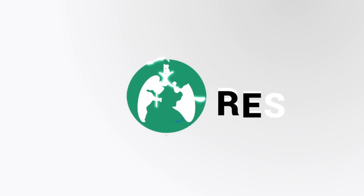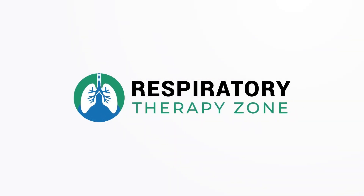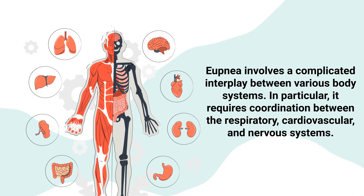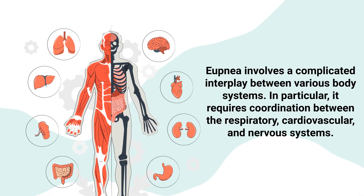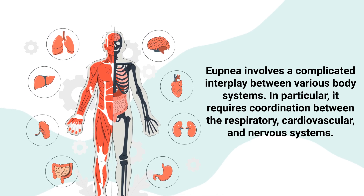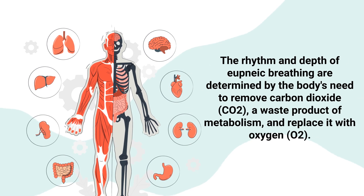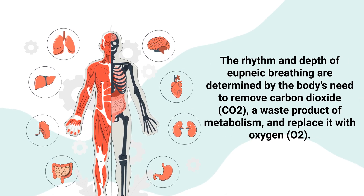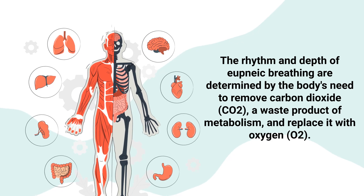We created this video to cover the medical definition and provide a brief overview of this topic. Eupnea involves a complicated interplay between various body systems — in particular, it requires coordination between the respiratory, cardiovascular, and nervous systems. The rhythm and depth of eupneic breathing are determined by the body's need to remove CO2, a waste product of metabolism, and replace it with oxygen.